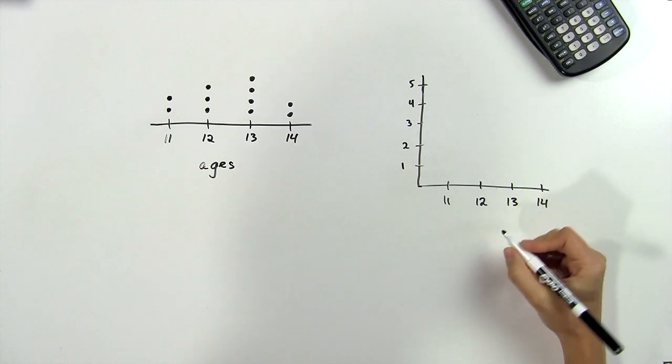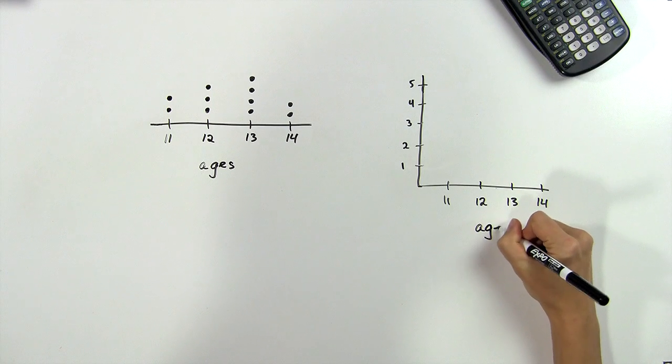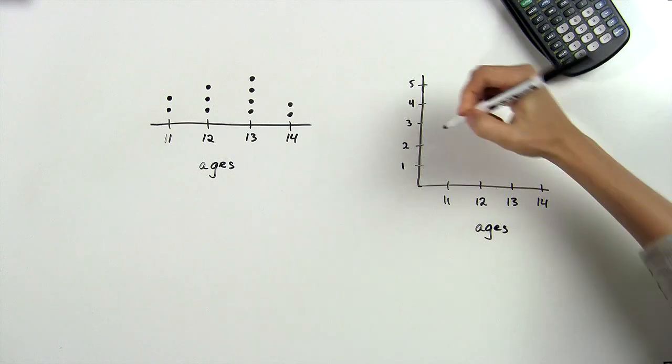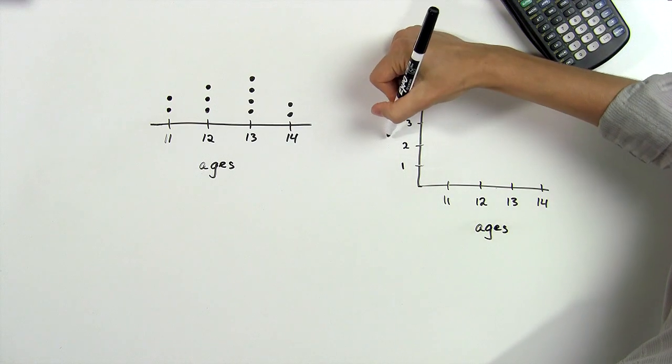So instead of placing a dot for each girl, we would only place one dot to represent the number of girls of that same age. So this axis will still be their ages, but this axis will now represent the number of girls.